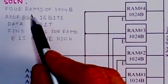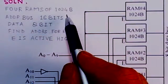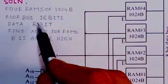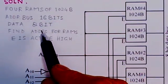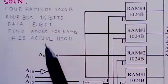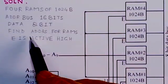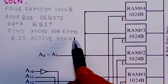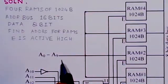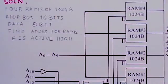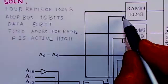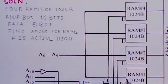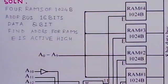So we will see what is the circuit arrangement. This indicates that there are four RAMs of 1024 bytes. Address bus is 16 bits and data is 8-bit. And we have to find the addresses for each RAM address ranges. If you notice here, the enable input E is going to each RAM, and this enable input is active high.